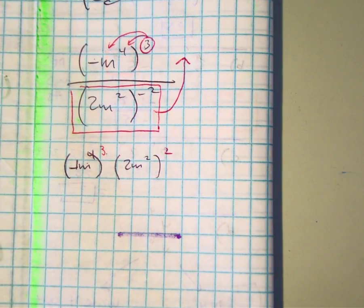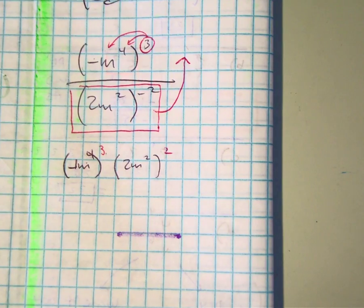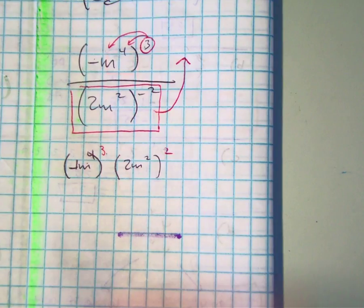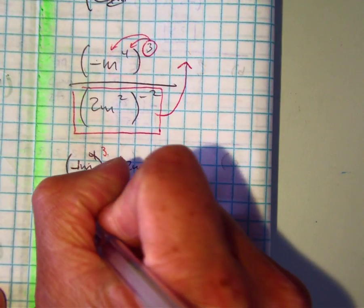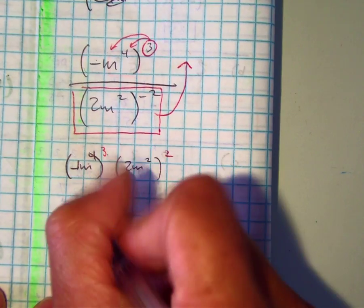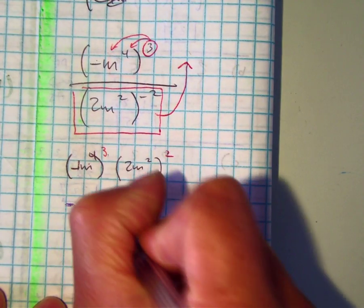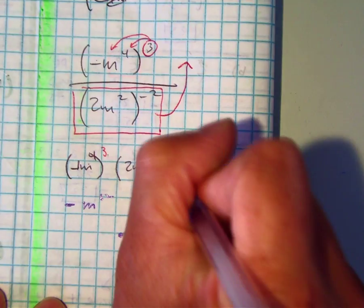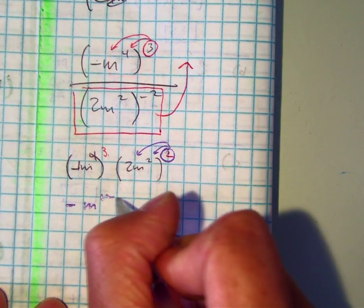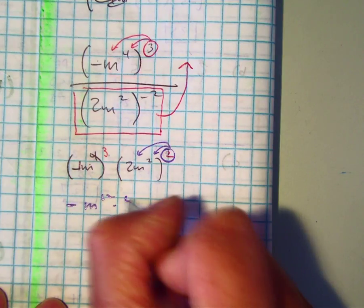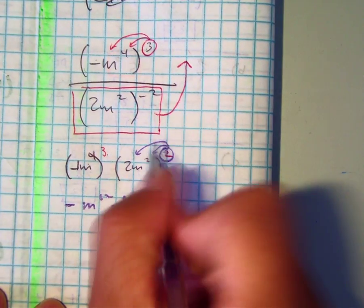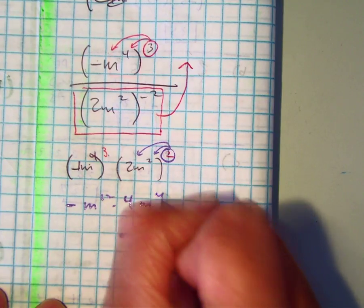If I go around now and simplify this problem, negative one to the third power, negative one to the fourth power is negative three. Four times three is... I can distribute this one. Two squared is four, and m to the second times two is m to the fourth power.